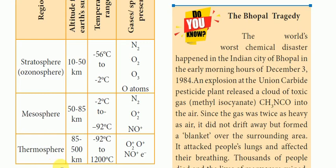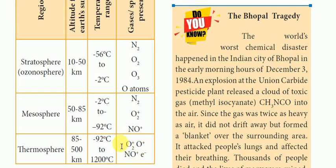This is the thermosphere. The temperature in the thermosphere ranges from minus 2 degrees centigrade to 1200 degrees centigrade. The chemical species present in the thermosphere include O2, O, NO, and positive and negative ions plus electrons — this is the ionic composition of the thermosphere.